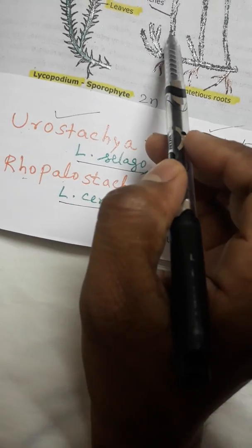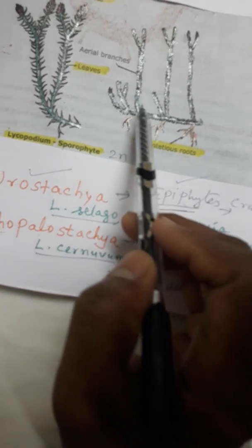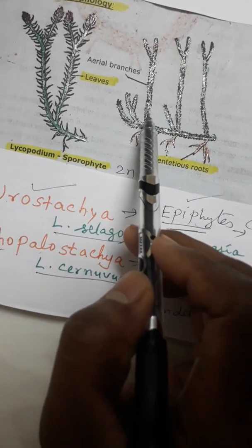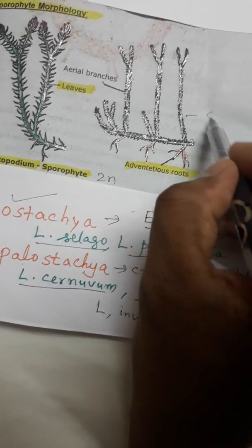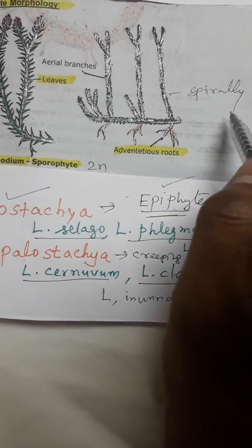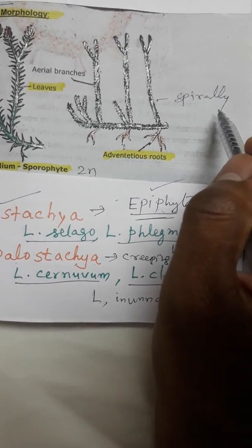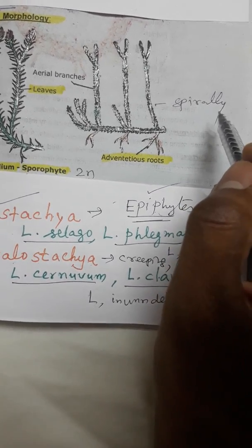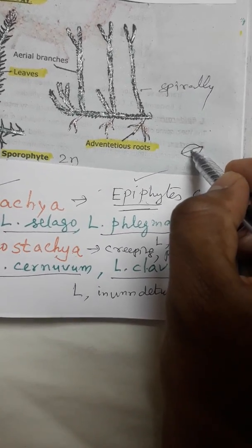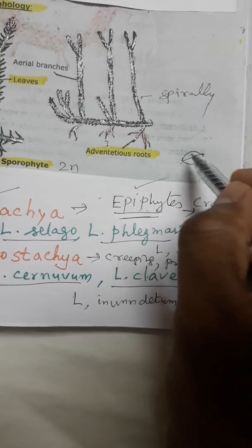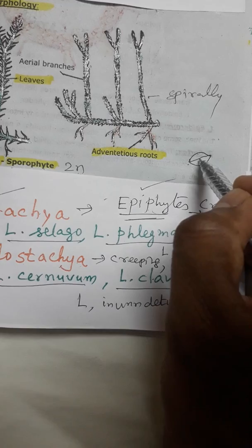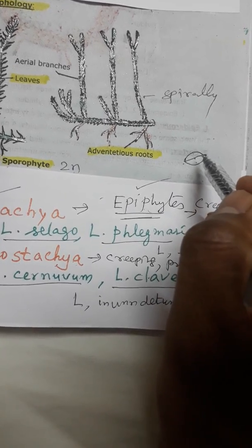On the dichotomous stems, all the leaves are microphylls arranged spirally. The leaves are sessile, with no petiole, no lateral veins, and only one midrib is present. The leaf is greenish and veinless — these are microphylls.